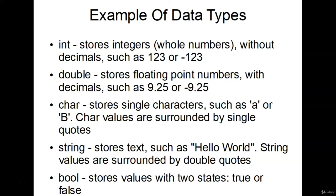These are some examples of the primitive data types — far from all, but just a few. The int stores whole numbers, for example 123 to negative 123. The double stores decimal floating-point numbers. The char stores a single character. The string is text — you guys remember this, we used it for our Hello World. And bool stores values that are in two states, either true or false. In the next video we'll cover the exact ranges for these primitive data types.